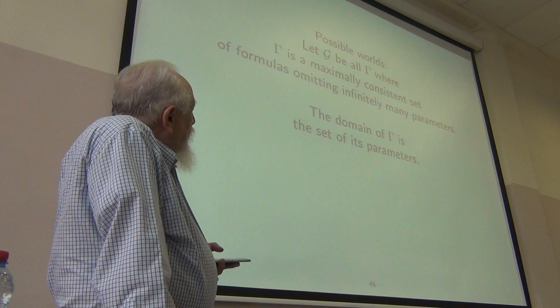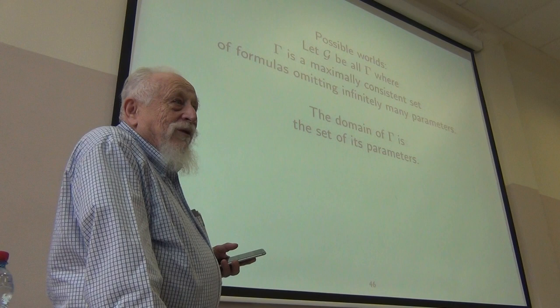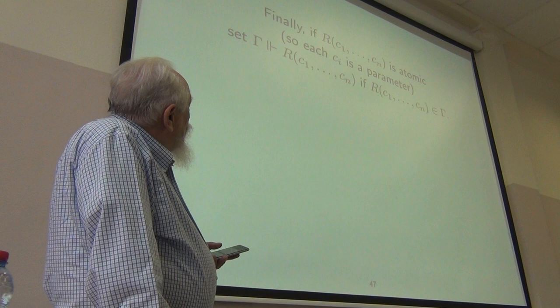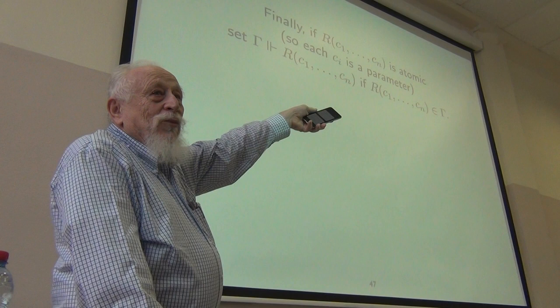So associated with each of these possible worlds, we have to have a domain. And that's going to be the set of parameters that turn up there. We need to say which atomic formulas are true at which worlds. Well, I'll say an atomic formula is true at a world if it's one of the members of it. Exactly like in the modal case.